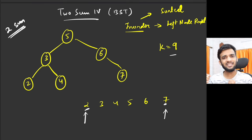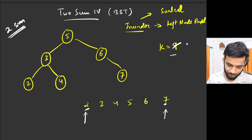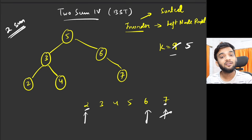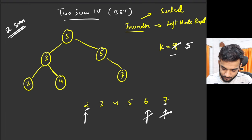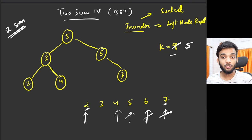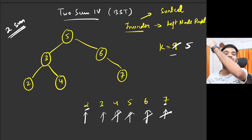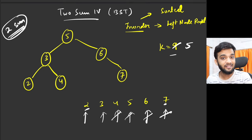If two plus seven equals nine, we got it. If the sum exceeds the target, we move the right pointer left to reduce the greater number. For example, if the target were five: two plus seven is nine, greater than five, so move right pointer — two plus six is eight, still greater, move again — two plus five is seven, reduce — two plus four is six, reduce — two plus three is five, we got it. If the sum is smaller, increase the left pointer.